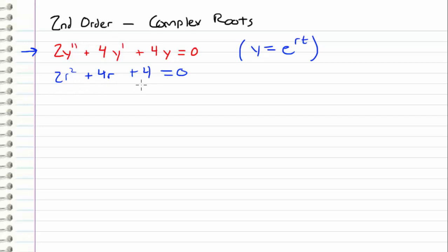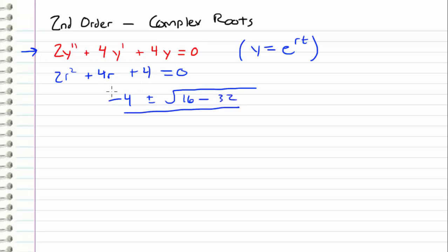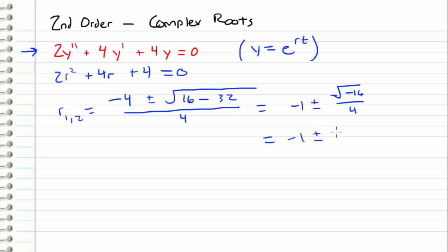We see that this doesn't look like it's going to factor, but that's okay. We'll just use the quadratic formula. So we have negative b plus or minus the square root of b squared, which is 16, minus 4 times 2 times 4 — so minus 32 — all over 2 times a, which is 4. This is going to be equal to our r1 and r2. Reducing this, we get negative 1 plus or minus the square root of negative 16 all over 4. I have a negative under the radical, so I'm going to factor out a negative 1 and write that as an i. So we get negative 1 plus or minus the square root of 16 over 4 times i, which reduces to negative 1 plus or minus 1 — so plus or minus i. So these are going to be our two roots, r1 and r2.